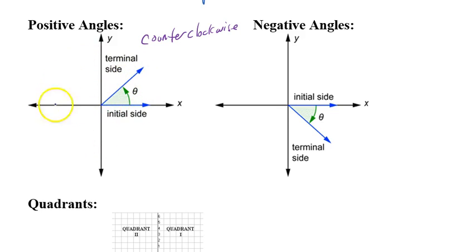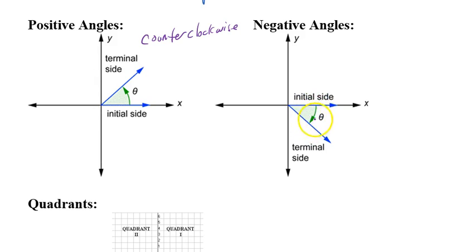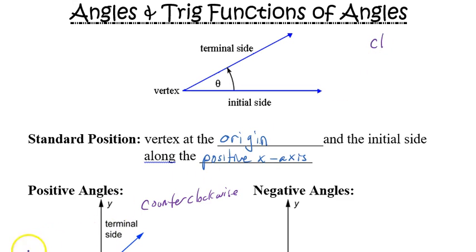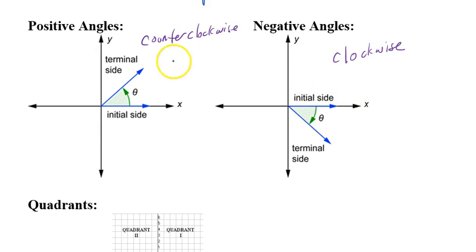It's the terminal side that moves. For negative angles, also in standard position with the vertex at the origin and initial side on the positive x-axis, the direction goes downward — clockwise. So to summarize: positive angles go counterclockwise, negative angles go clockwise.